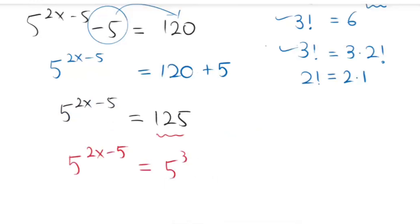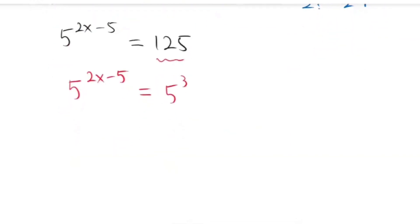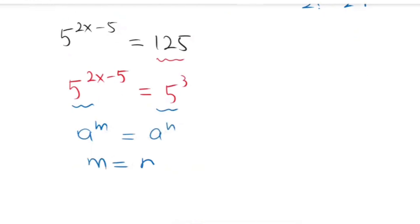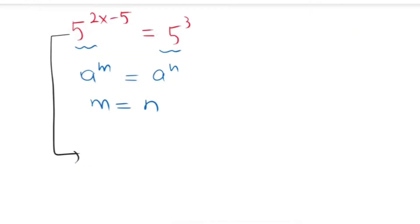Now I'm going to use the exponential rule. We have the same base, so we apply the rule: if a to the power of m equals a to the power of n, then m equals n. Here we equate the powers: 2x minus 5 equals 3.